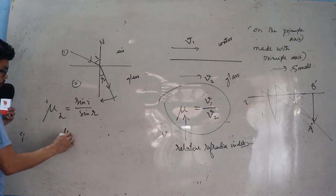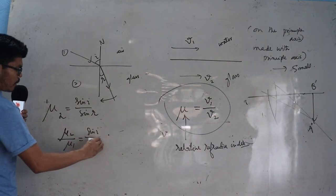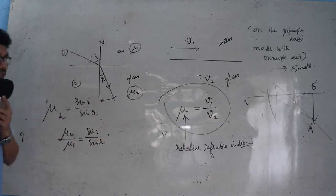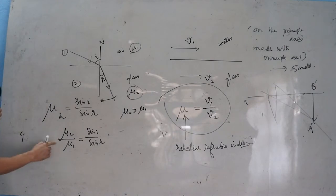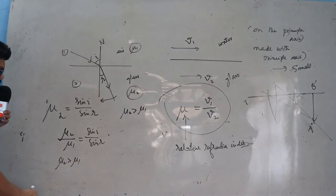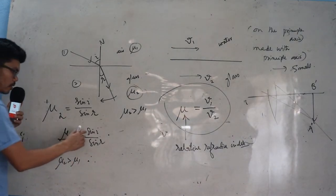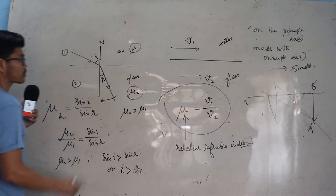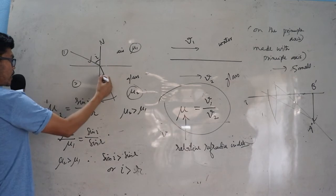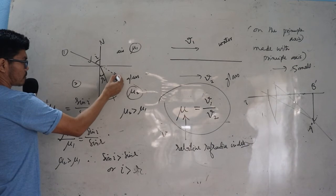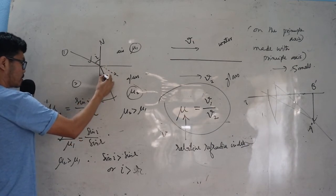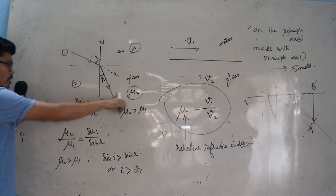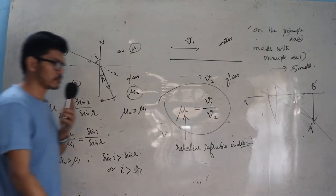If it is glass, this is mu2, and if it is air, this is mu1. Since glass is denser than air, mu2 is greater than mu1. Therefore sine i is greater than sine r, which means i is greater than r. This means the ray turns towards the normal — this is the reason why the refracted ray bends towards the normal when it travels from a rarer to a denser medium.